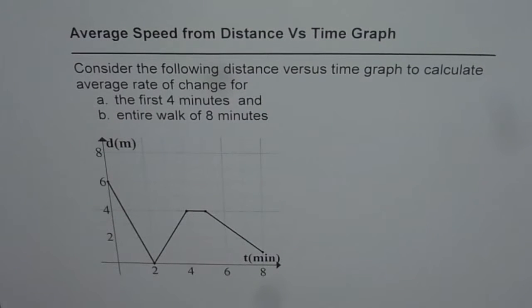Here is a practice test question for you. You need to find average speed from a distance versus time graph. The question is: consider the following distance versus time graph to calculate average rate of change for the first 4 minutes and the entire walk of 8 minutes.